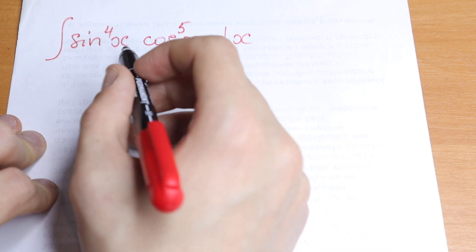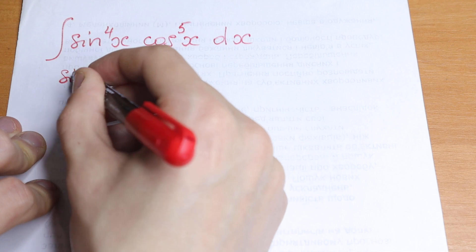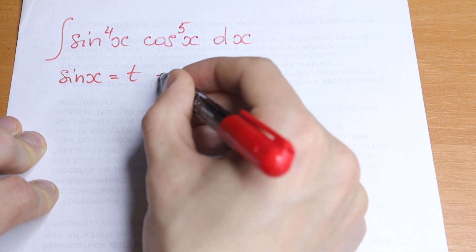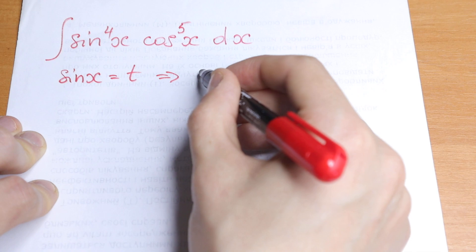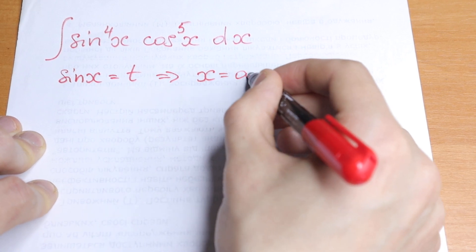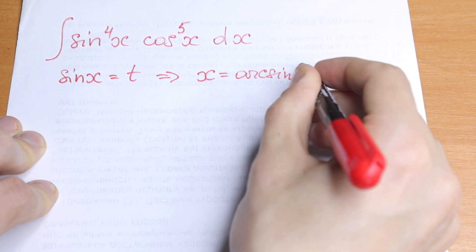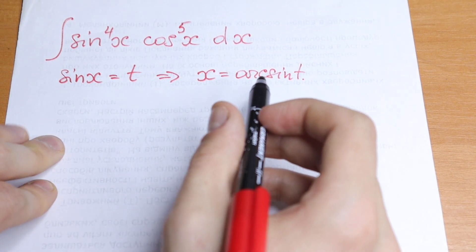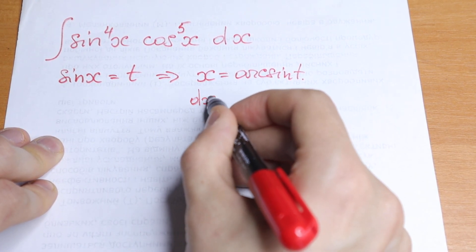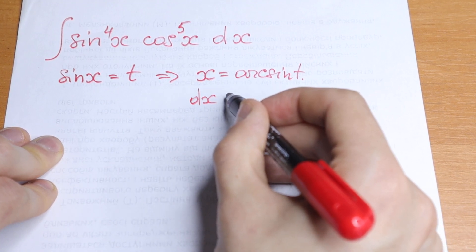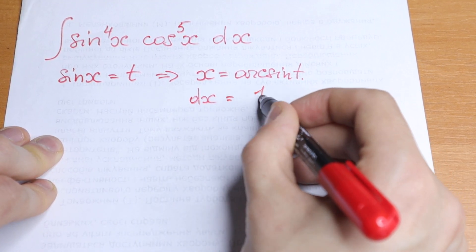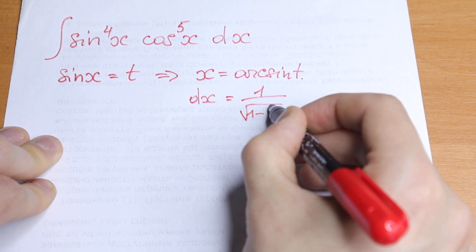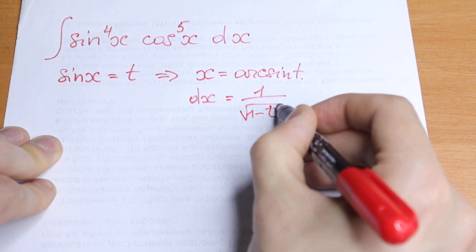I want to show you a really good substitution. If we write that sine x equal to t, then from here x equal to arc sine t. So this is our substitution. From here we can easily find dx by finding the derivative of arc sine t. This derivative will be equal to 1 divided by the square root of 1 minus t squared, dt.